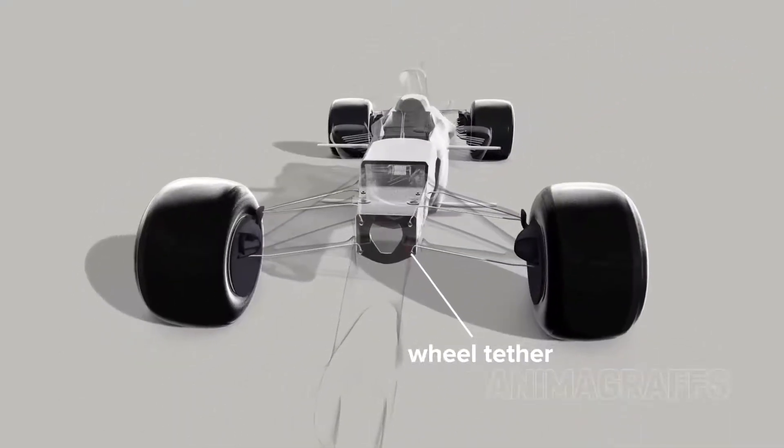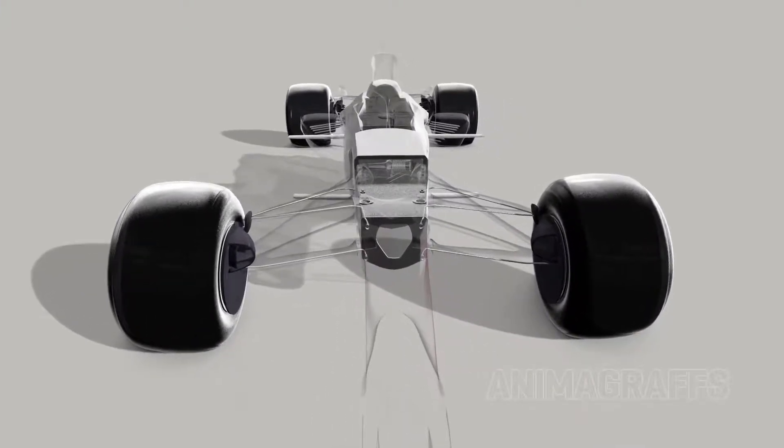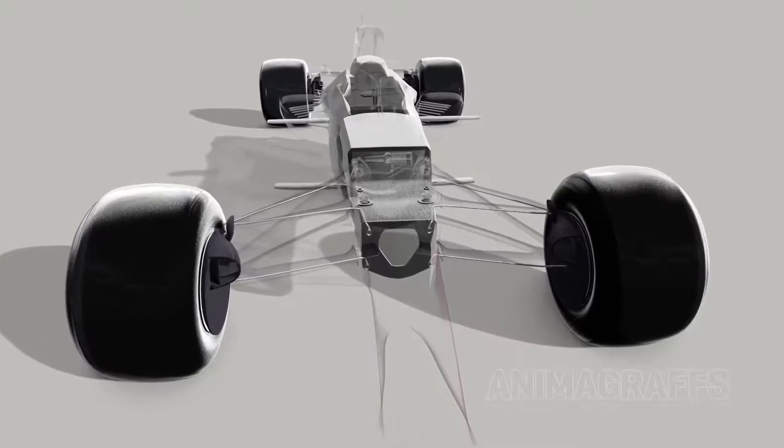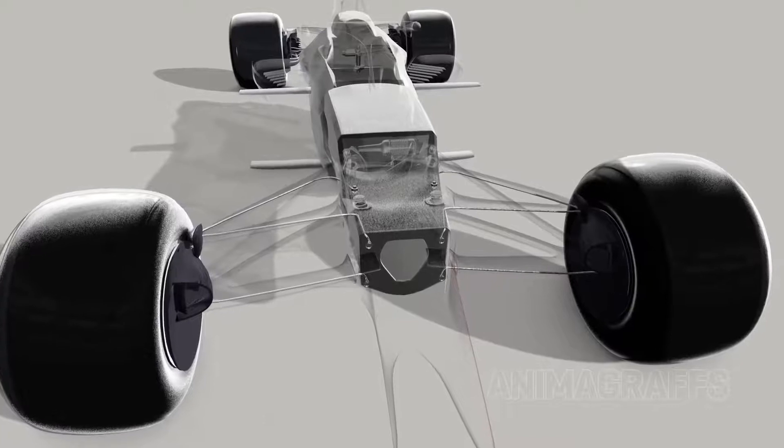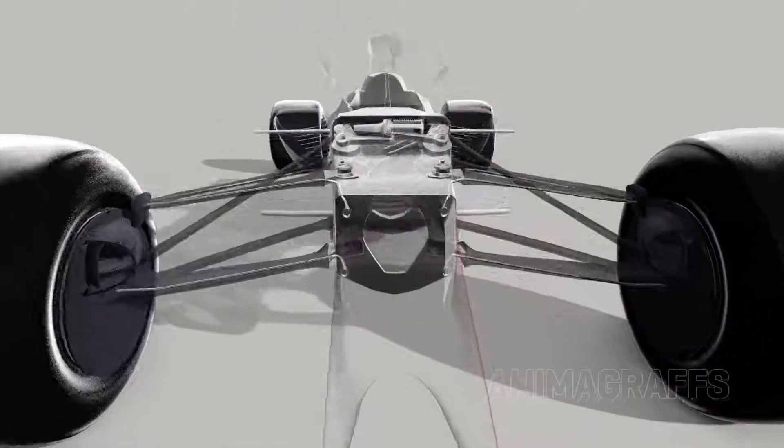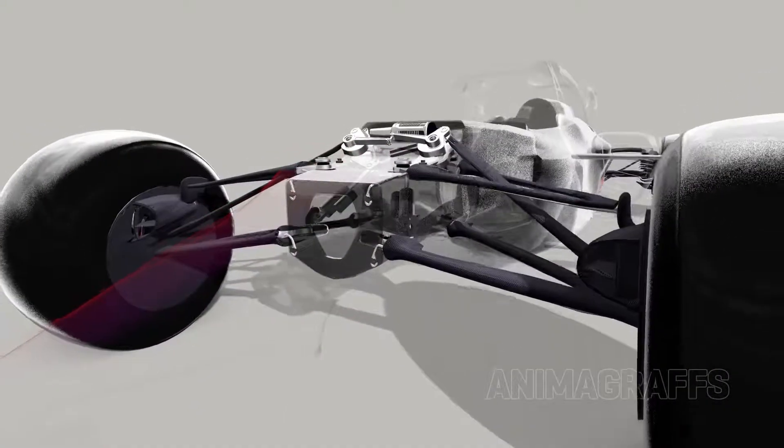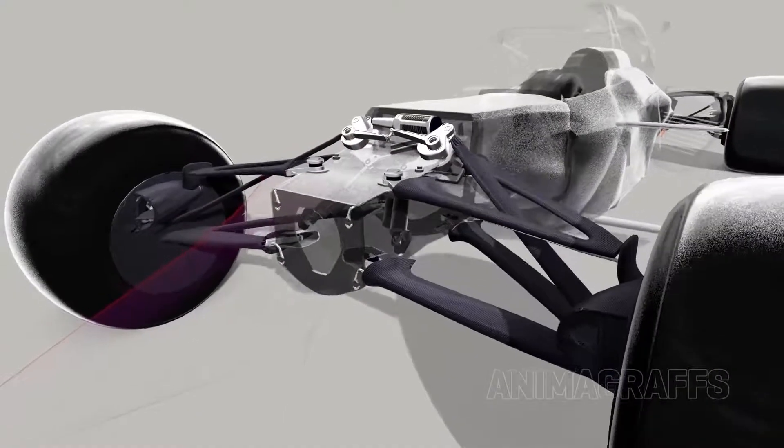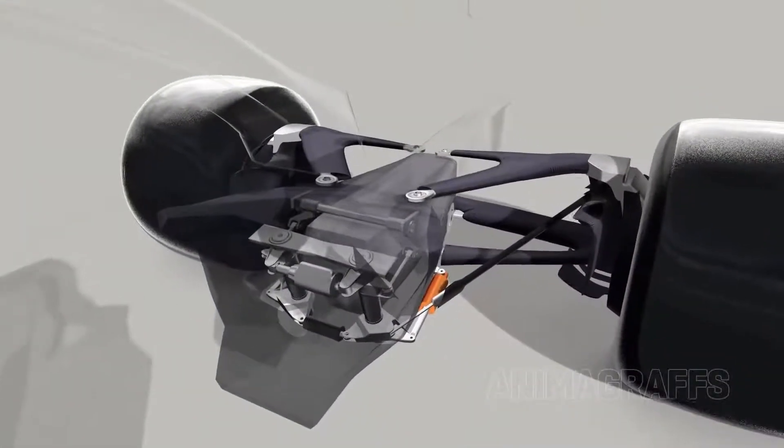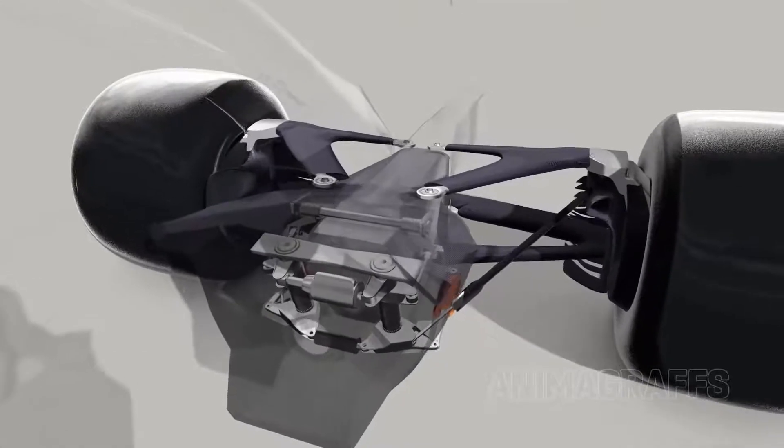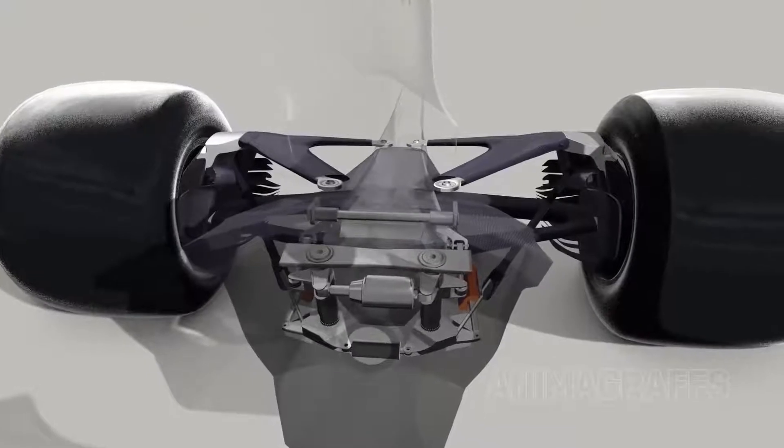All wheels must be attached to the car with wheel tethers. These are strong cables that keep wheels connected to the car in the event of an accident. They're required to pass through more than one suspension element for increased safety. With few exceptions, most exposed suspension elements are either made from or bonded with carbon fiber for better aerodynamic forms. This is another major reason suspension parts are packaged inside bodywork, away from outside air, wherever possible.